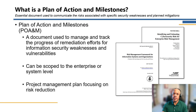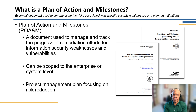A plan of action and milestones, also referred to in the industry as a POAM, is essentially a document that tracks identified weaknesses, typically at the system level, although it could be at the enterprise level. It tracks those remediation efforts against defined milestones, as agreed upon by the relevant stakeholders. The POAM is formally described in NIST SP 800-37, which is the Risk Management Framework.